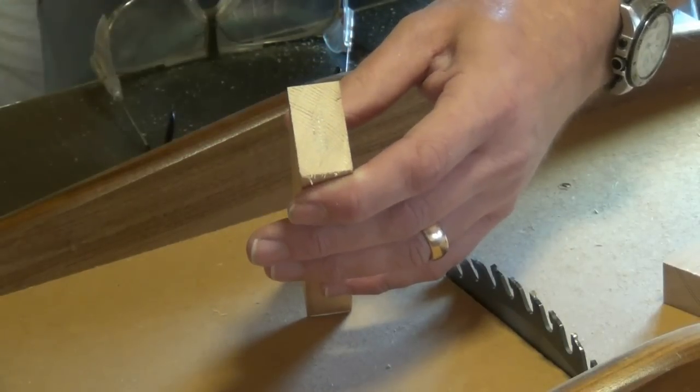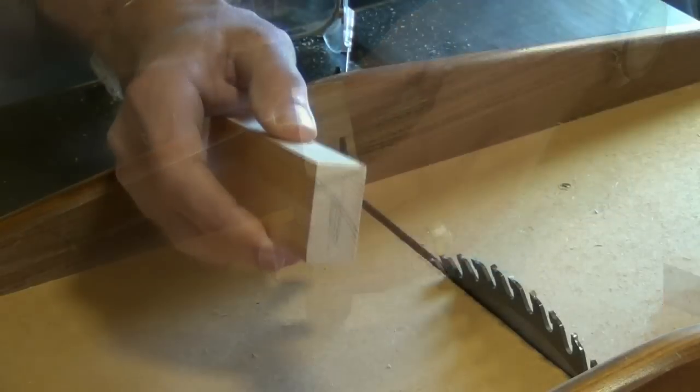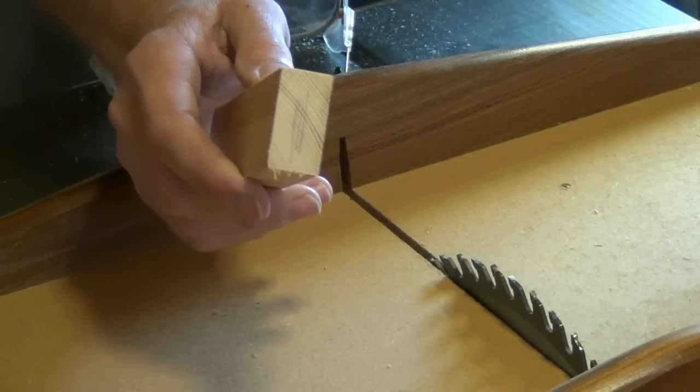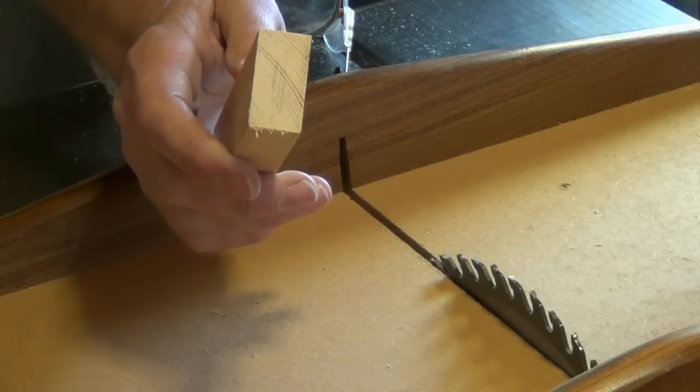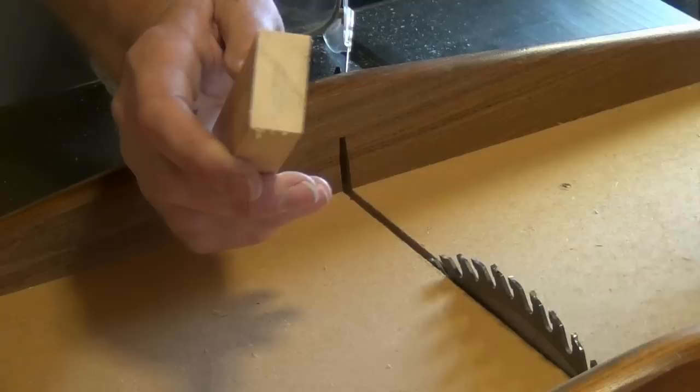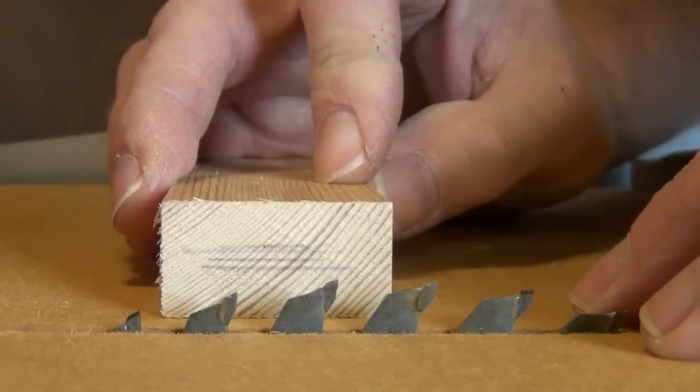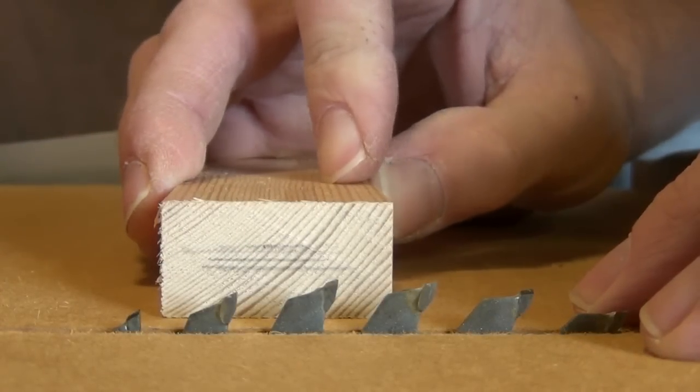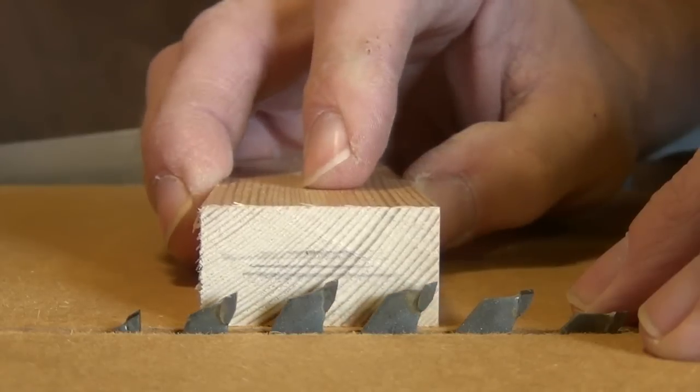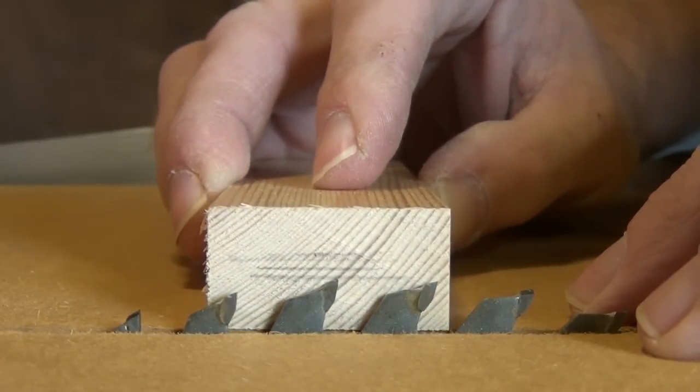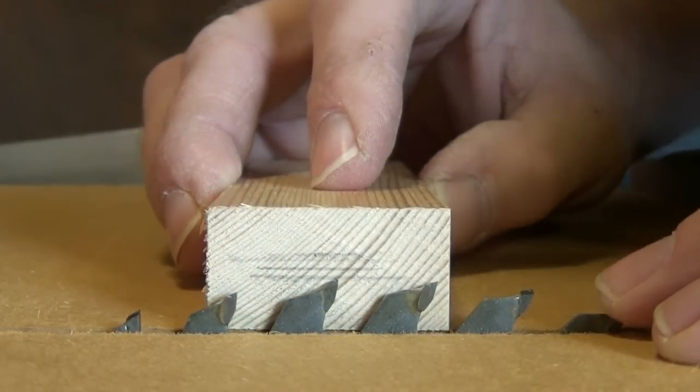That's not quite accurate enough for our joint though, so we're going to set the height of our saw to just below that pencil line. With the component face down on the table or on the crosscut sled, move it up close to the teeth. Now you need to rotate the blade until you find the highest point in its travel.